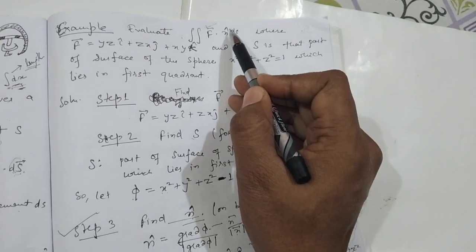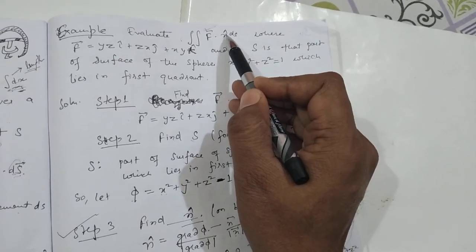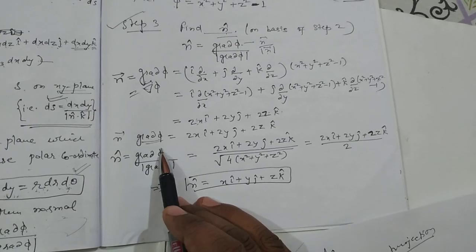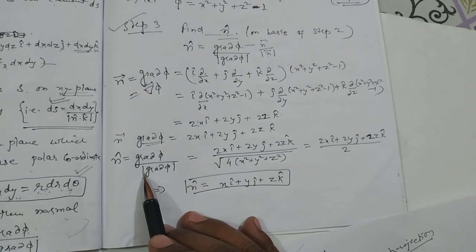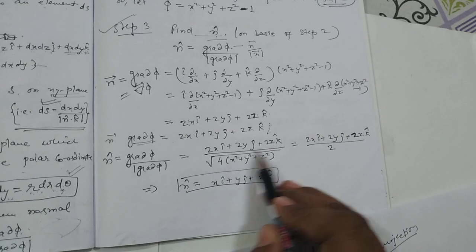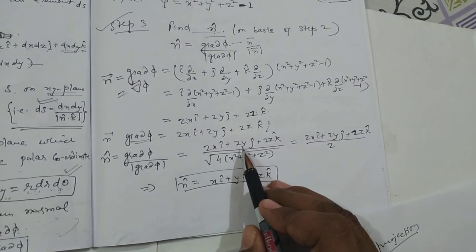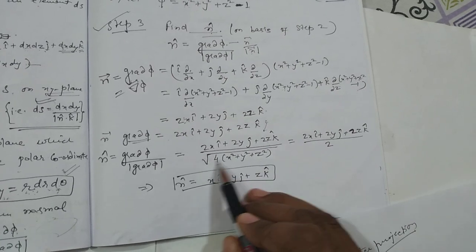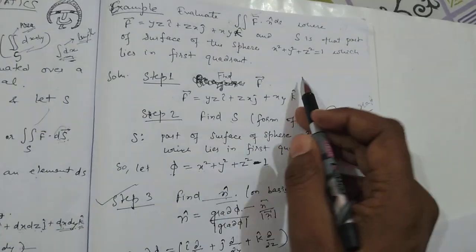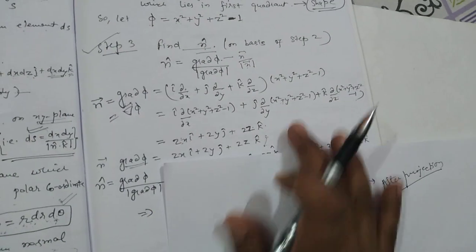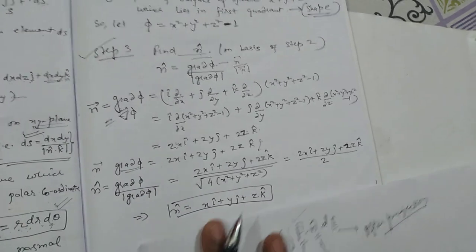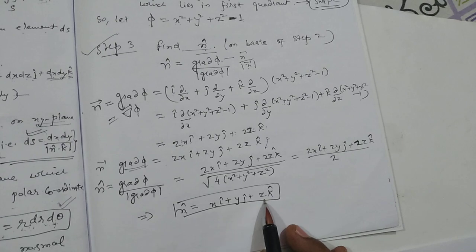Now to find n̂, we divide n⃗ by |∇φ|. The magnitude |∇φ| = √(4x² + 4y² + 4z²) = 2√(x² + y² + z²). Since we are on the unit sphere, x² + y² + z² = 1, so |∇φ| = 2. Therefore n̂ = (2xî + 2yĵ + 2zk̂) / 2 = xî + yĵ + zk̂.